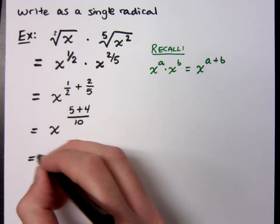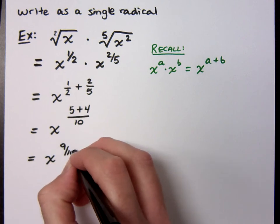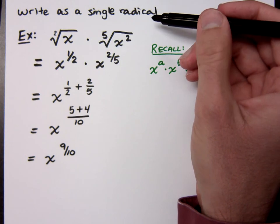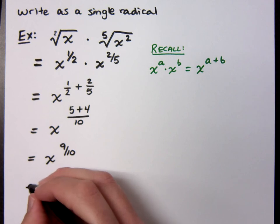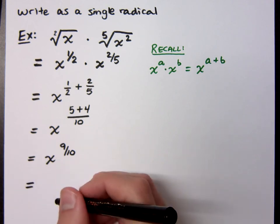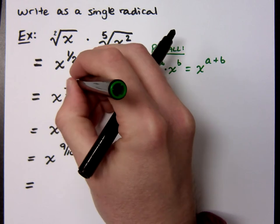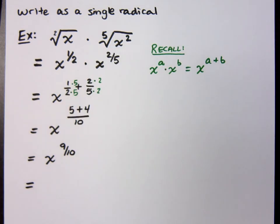So all together I have x to the 9 tenths, but the instructions say to write as a single radical, so I've got to rewrite this as a radical. How do I do that? How'd you get 5 plus 4? Oh, I see. You put in the missing factors here, a 5, and the missing factors here, a 2.